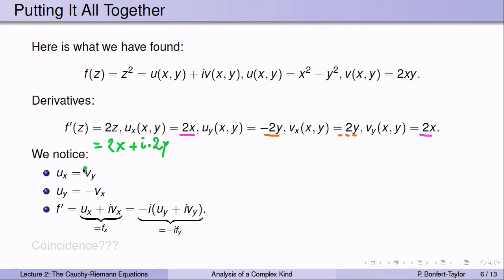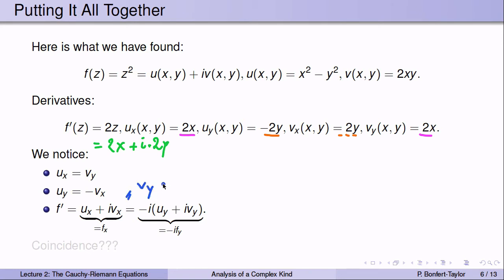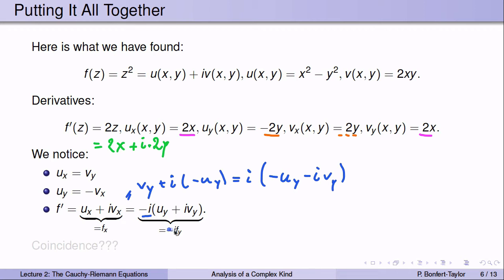Alternatively, since ux equals vy and vx equals minus uy, we can write f prime as vy plus i times negative uy, and factoring out minus i gives minus i times uy plus ivy. So f prime equals the x-derivative of f (fx), or equivalently minus i times the y-derivative of f (fy). Was this coincidence, just true for z squared? Let's look at another example.